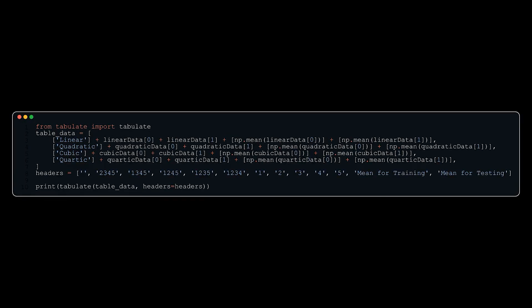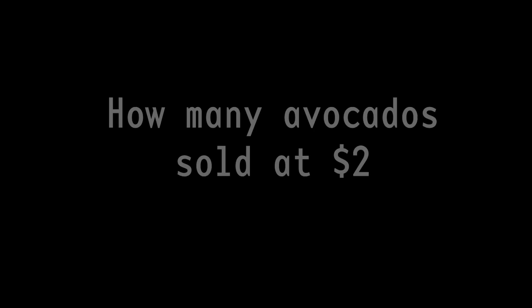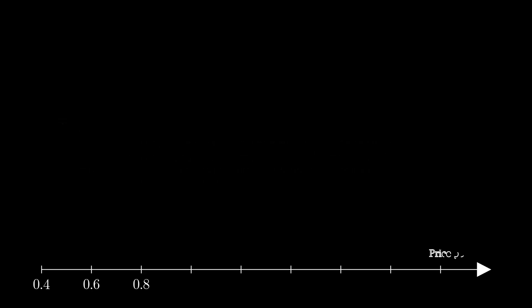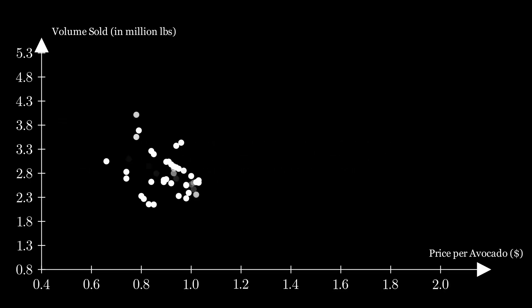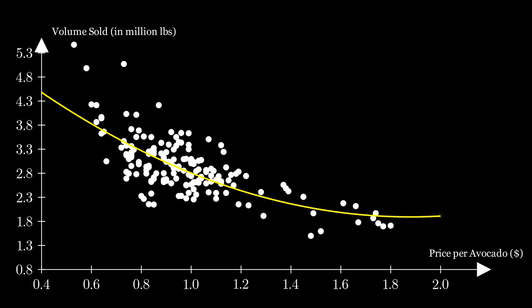And now that we know the quadratic model is the best model for our data, we can now make a prediction on how many avocados would be sold in Los Angeles if we made avocados two dollars on that day. The answer turns out to be 1.91 million avocados sold, which is a lot of avocados. Here's the final bit of code.